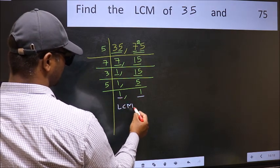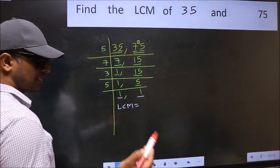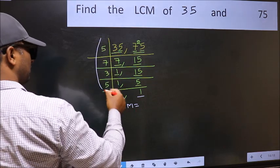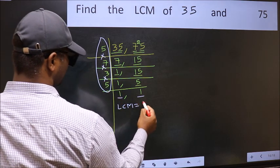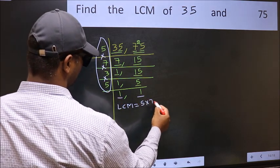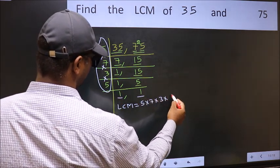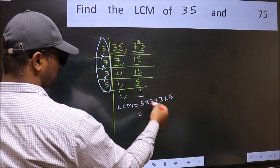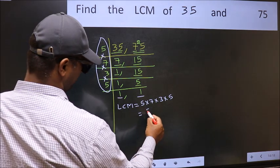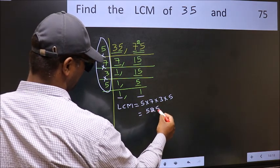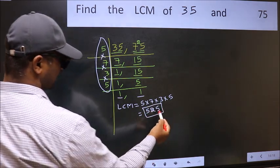So our LCM is the product of these numbers. That is 5 into 7 into 3 into 5. When we multiply these numbers, we get 525 is our LCM.